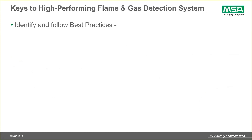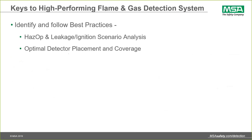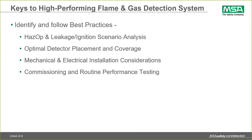Best practices for achieving a high-performing system include executing a HAZOP and ignition scenario analysis — identifying what events are most likely to lead to a fire ignition on site. Once that's done, we can consider the effectiveness of different detector placement options and coverage angles. Proper mechanical and electrical installation considerations are required: a solid mounting structure, compliant electrical installation with conduit or cabling, and power distribution. Once we have a fault-free system, we commission it and establish routine performance testing, well-defined operation and maintenance practices, a logbook, physical inspections, and training for operators and maintenance personnel.